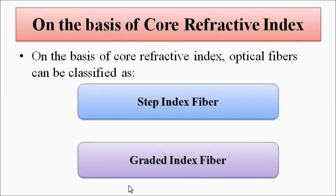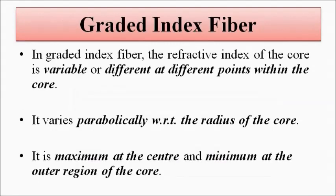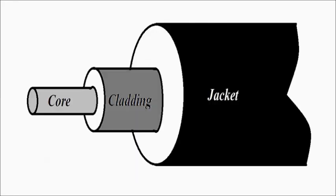The second type is the graded index fiber. In the graded index fiber, the refractive index of the core is variable — it is not constant. It is different at different points within the core. Basically, it varies parabolically with respect to the radius of the core. The refractive index at the center of the core is maximum, and it is minimum at the outer surfaces. In between, it changes parabolically.